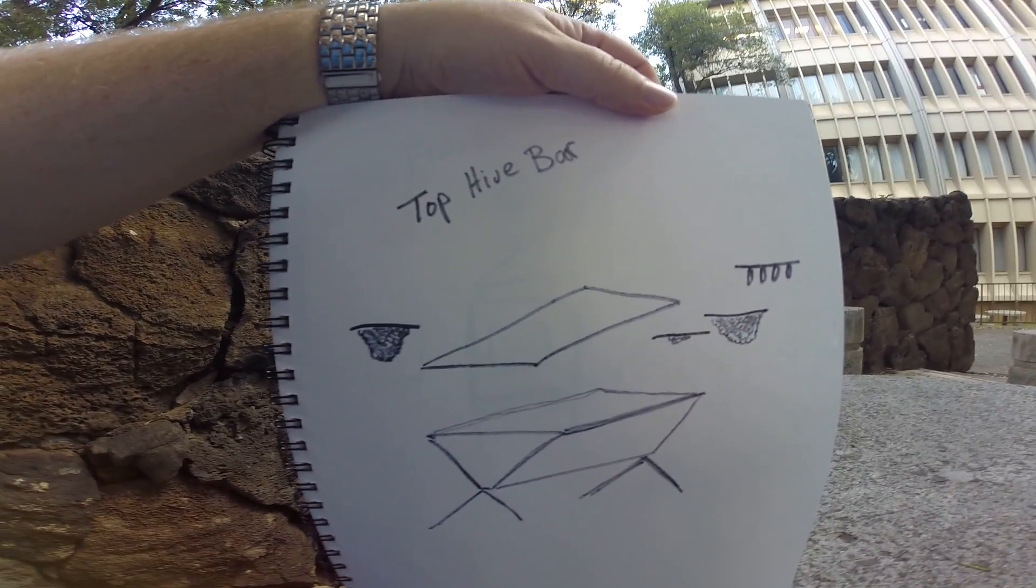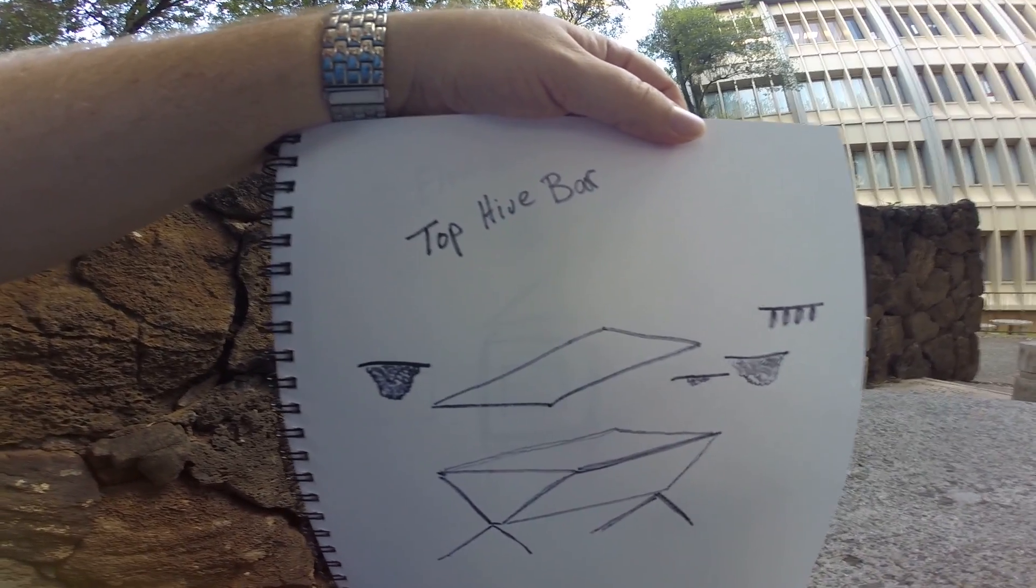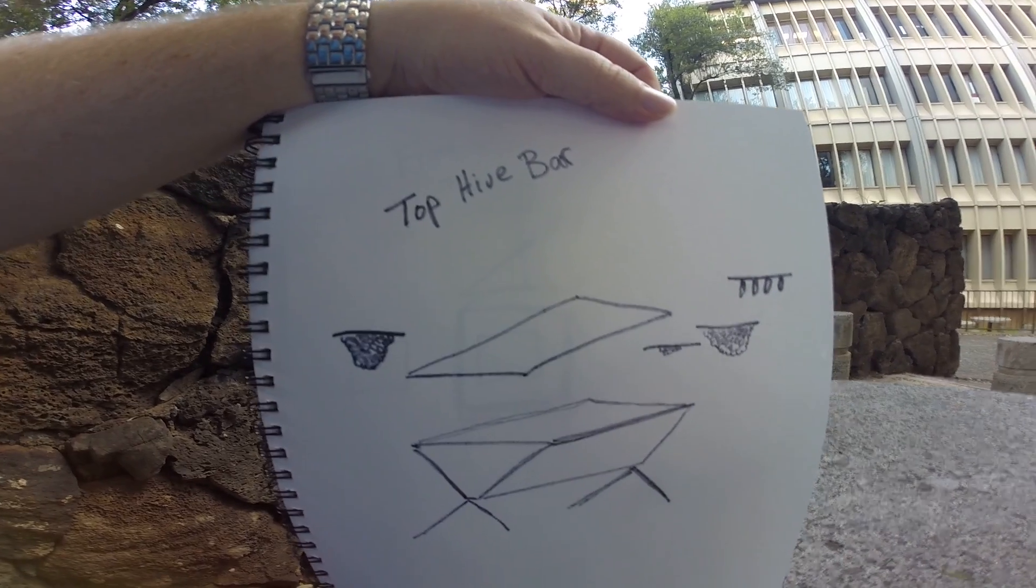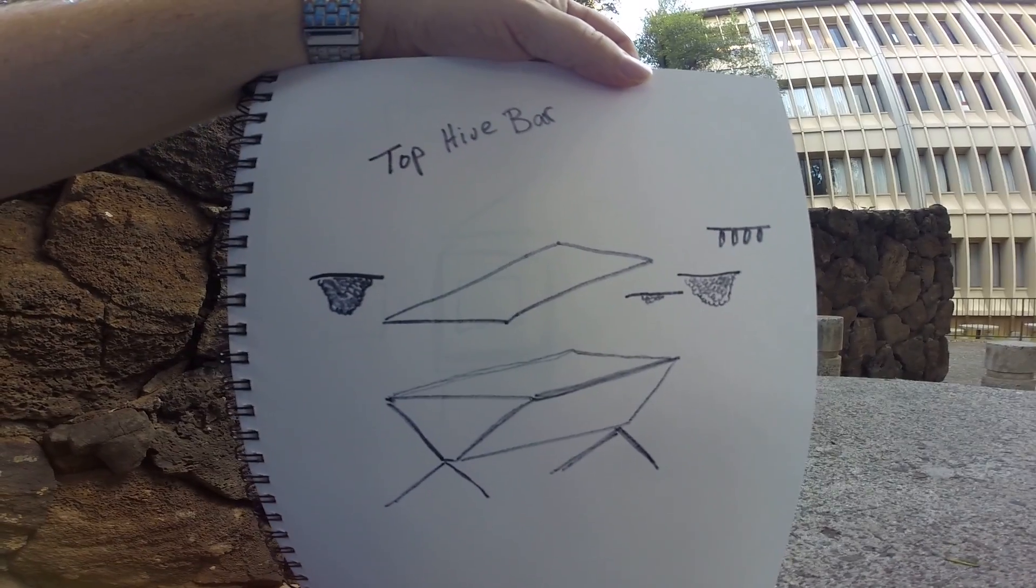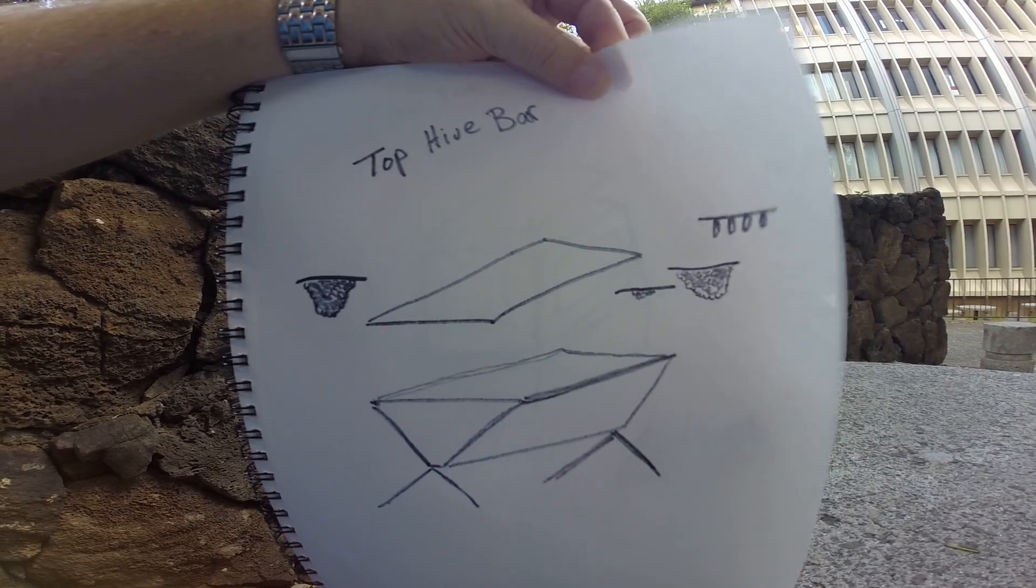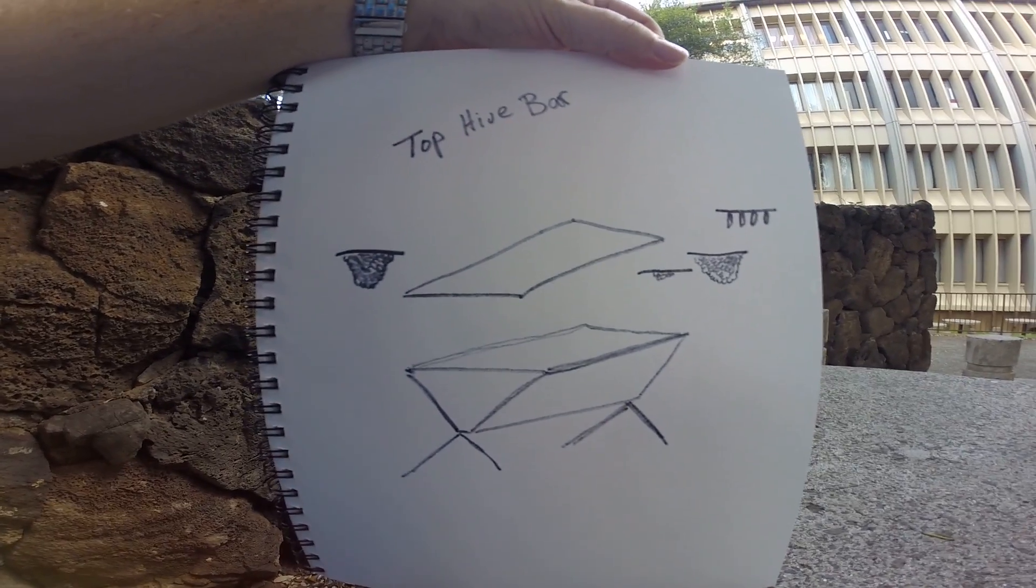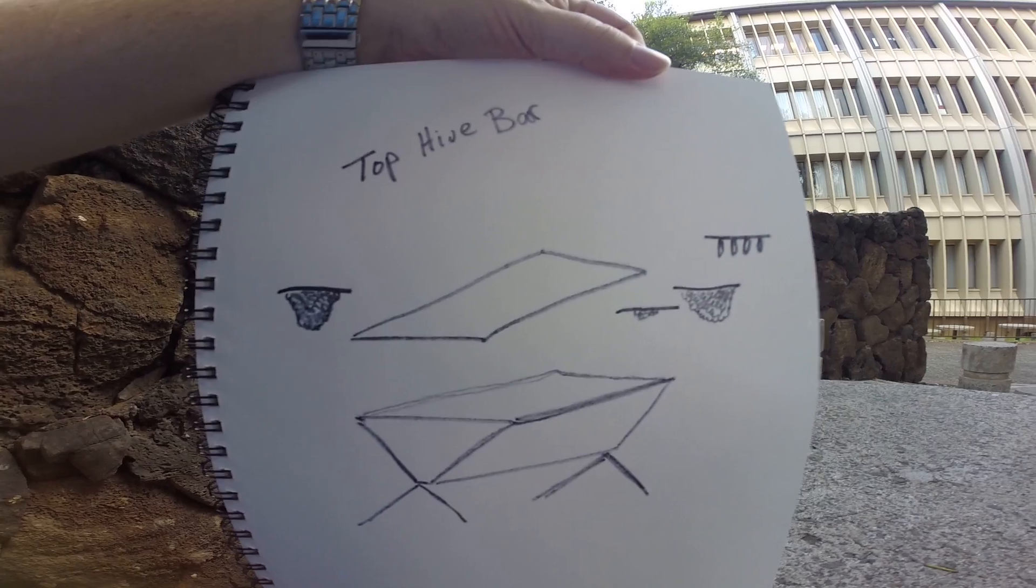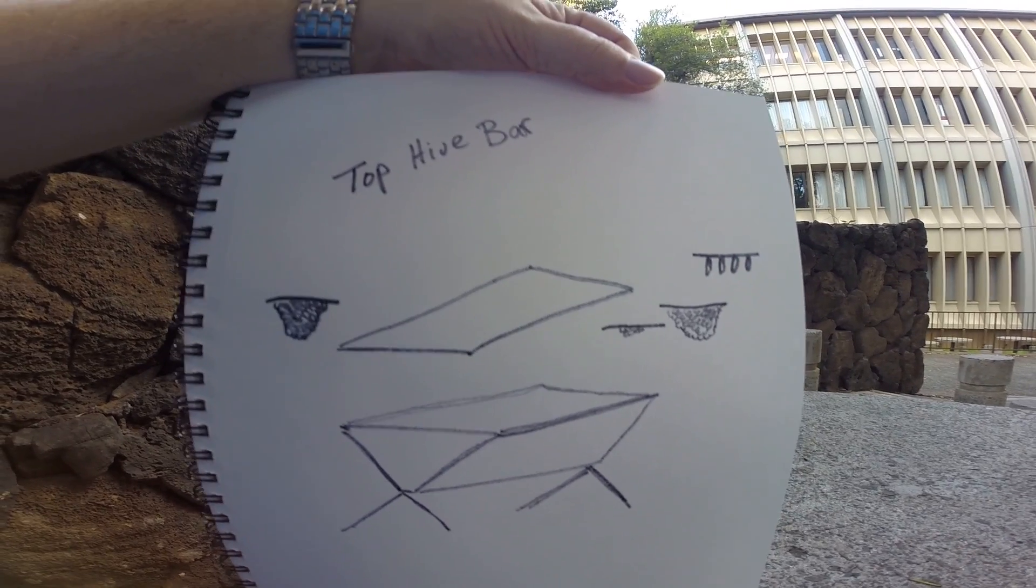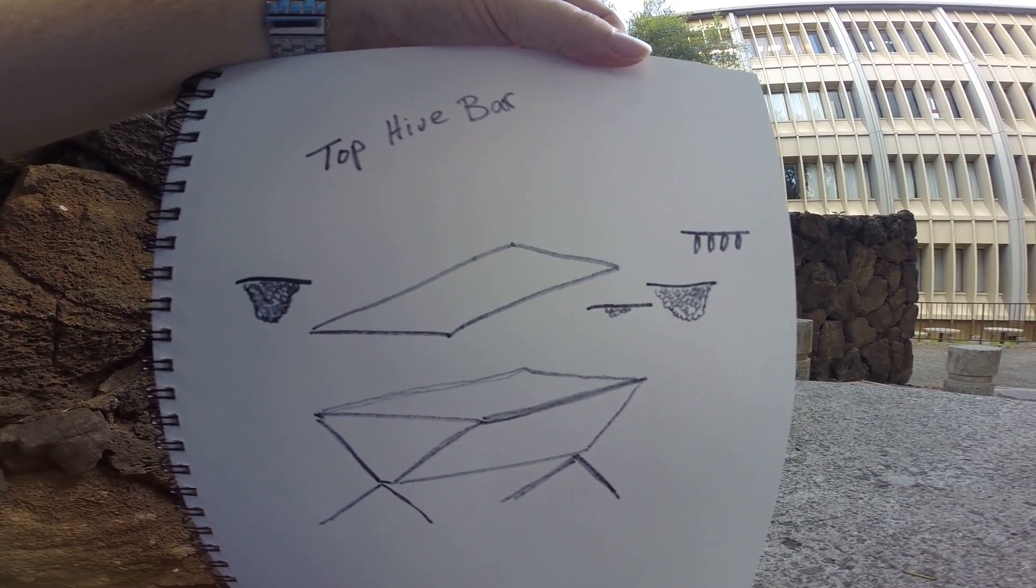What is a top hive bar? A top hive bar box is made out of cedar, which may be beneficial to honeybees instead of using pine, which is normally what beekeepers use.